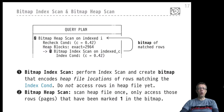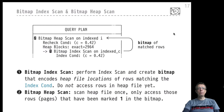The answer from PostgreSQL is a pair of plan operators: the bitmap index scan and its brother operator, the bitmap heap scan.